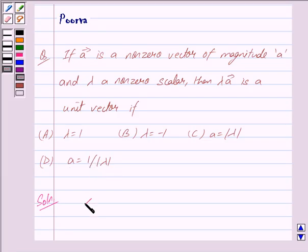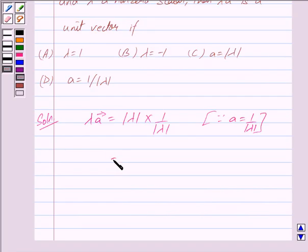then we get lambda vector A is equal to mod lambda into 1 upon mod lambda. Since we have A is equal to 1 upon mod lambda, we get this is equal to 1.